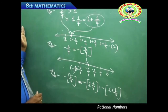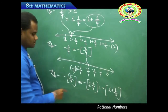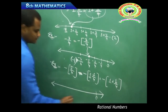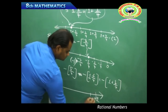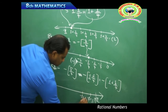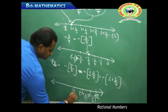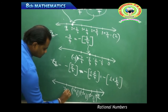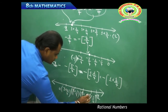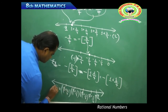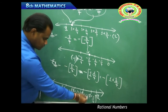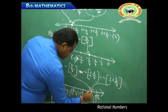To represent negative 5/4 on the number line, I start from 0 and mark minus 1, then divide the interval between minus 1 and minus 2 into quarters: minus 1 plus 1/4, minus 1 plus 2/4, minus 1 plus 3/4, and minus 1 plus 4/4 which is minus 2. The value minus 1 plus 1/4 — which is negative 5/4 — is identified at the first division between minus 1 and minus 2.